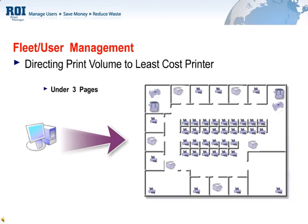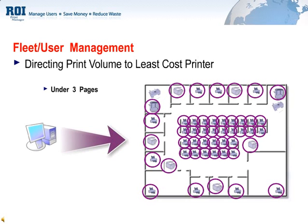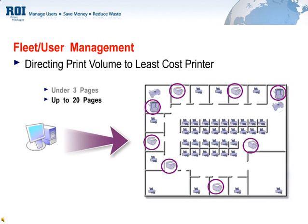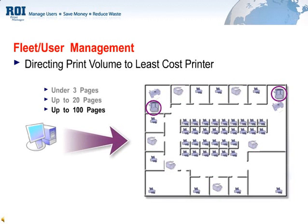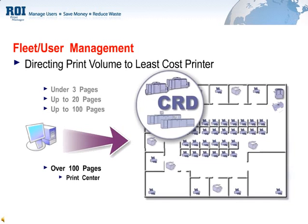Jobs under 3 pages can be printed anywhere, helping to speed workflow on smaller documents. Jobs up to 20 pages can be redirected to these devices — quicker and cost-effective. Jobs up to 100 pages directed to the multi-function printer. And larger jobs to a print center or outsourced. This really is the perfect print strategy and will save money.